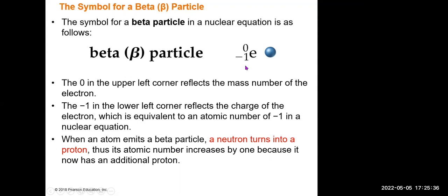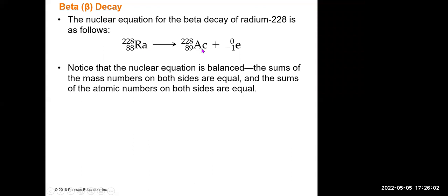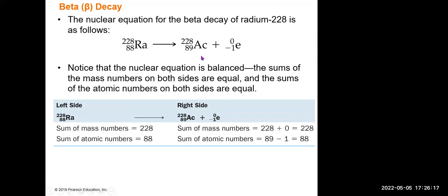The electron comes from the nucleus — a neutron turns into a proton while simultaneously producing an electron. The beta decay equation has the electron as the small particle, with parent and daughter nuclei. For example, balancing: 88 equals 89 minus 1, and 228 equals 228 plus 0. This equation is balanced correctly.